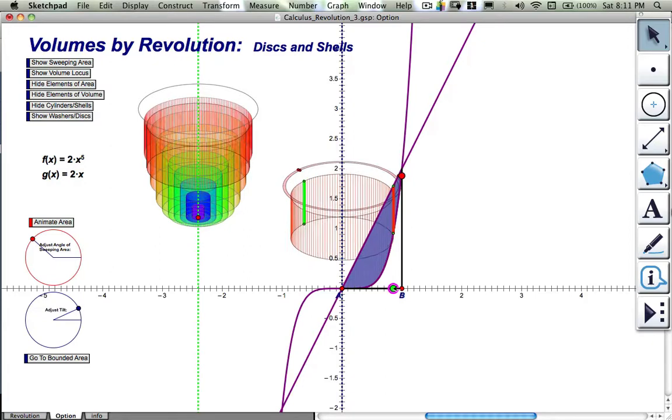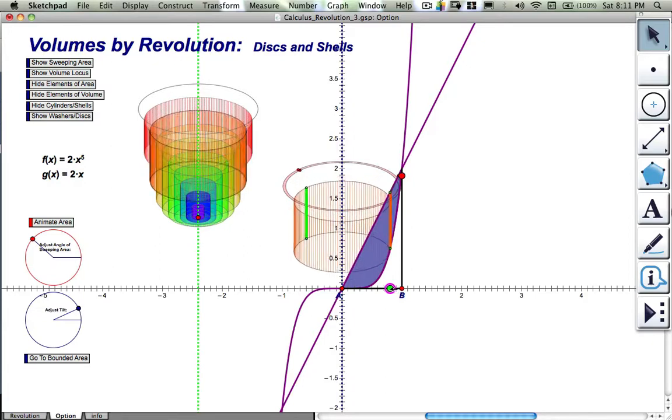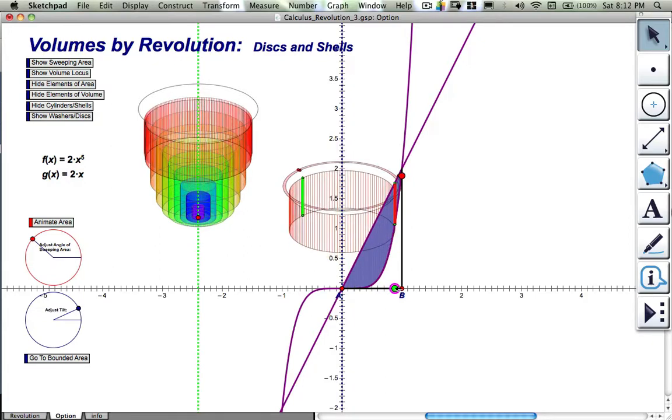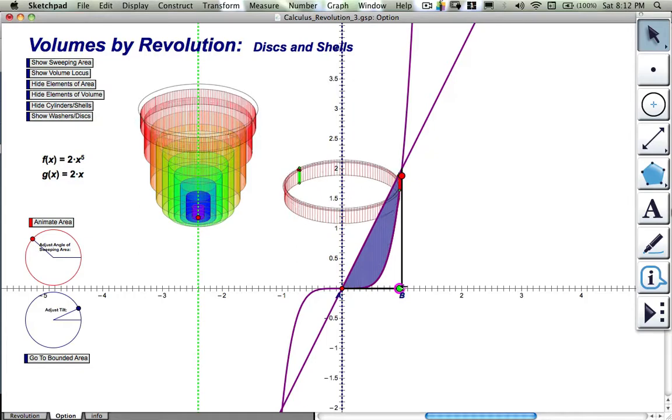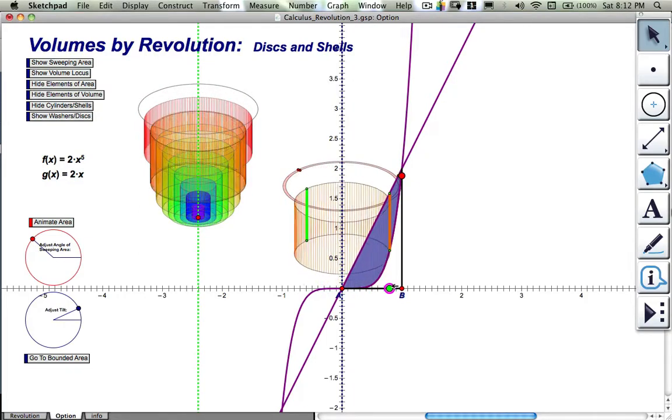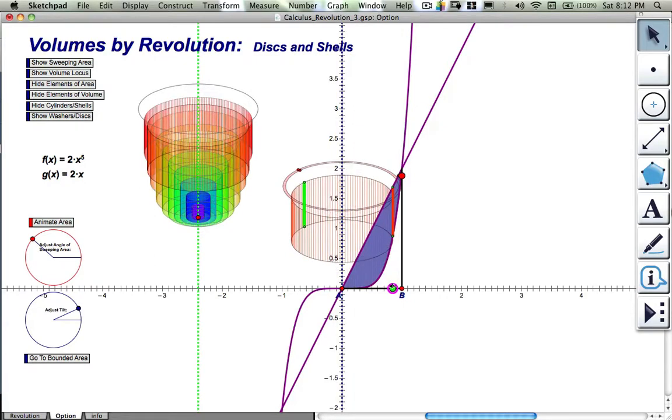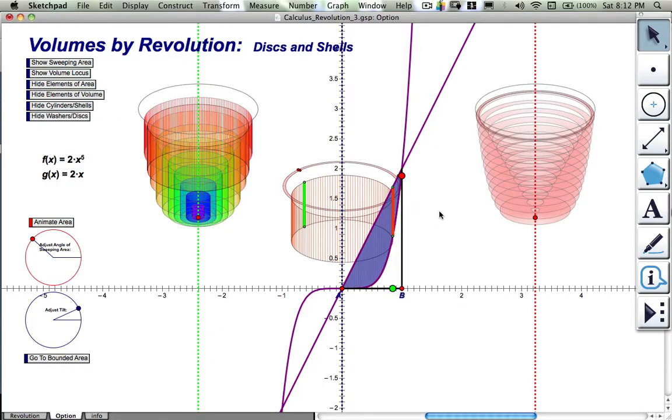So if we can describe what one of them has for its dimensions as far as how the x value relates to its radius, and what is the height of the cylinder in terms of x, then we will know how to find the volume of a general one. And then we can integrate that expression to find the volume of the whole solid.